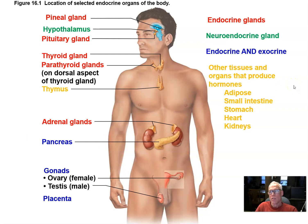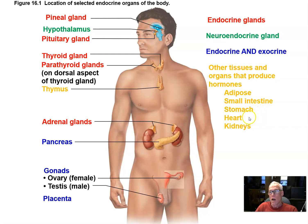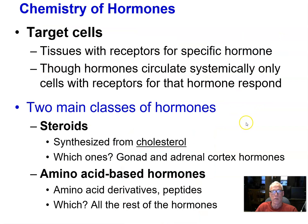Some organs just happen to have a small component of endocrine tissue and release hormones. Adipose tissue releases some important hormones that affect food intake and satiety. Much of the digestive process is controlled by hormones secreted by the digestive tract. The stomach releases a hormone, the heart releases an important hormone that helps control blood volume, and the kidneys release a hormone that helps control red blood cells in the blood.